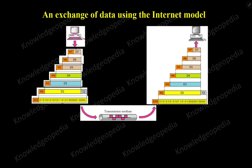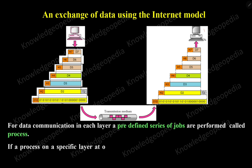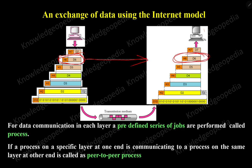At the receiver side, a similar approach is done in reverse. Every layer takes the data, understands the meaning of the header, removes the header part, and gives it to the next stage. The data link layer understands the header and trailer, and passes it upward. Finally, the receiver receives the original data. For data communication, in each layer a predefined series of jobs are performed, called the process. If a process on a specific layer at one end is communicating to a process on the same layer at the other end, it is called a peer-to-peer process — for example, layer six at the source communicating to layer six at the destination.